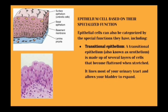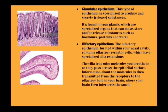Based on specialized functions, epithelium cells are further classified as transitional epithelium, which consists of several layers that become flattened when stretched. When the basement membrane is stretched, the cells appear as one single layer. Transitional epithelium is found in the urinary tract, allowing the bladder to expand. Glandular epithelium is involved in producing and secreting substances and is found in organs involved in storage and release of substances like hormones, proteins, and water.